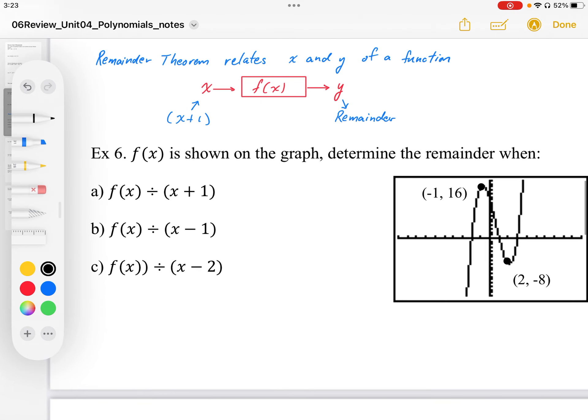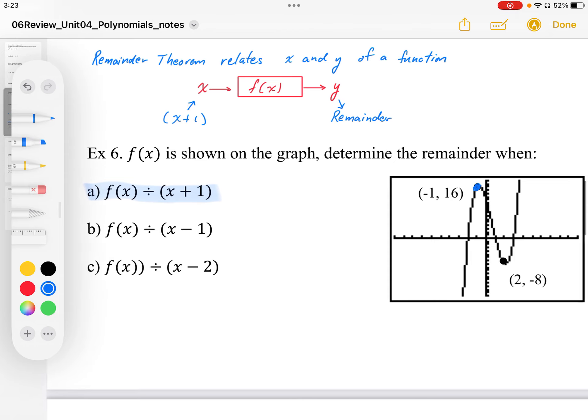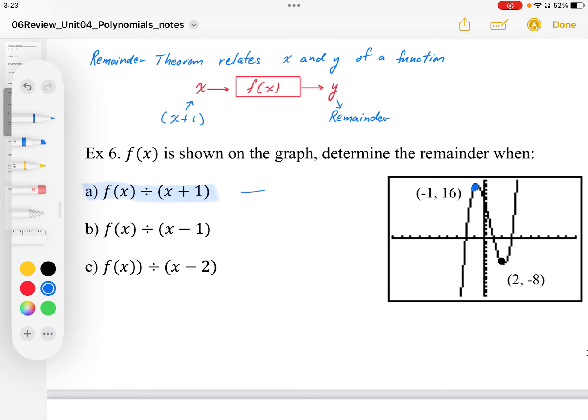So if we take a look at example 6a, if we divide by x plus 1, the root is negative 1, so if we plug negative 1 into our x value, we get a y value of positive 16. So in this case, this gives us a remainder of 16.